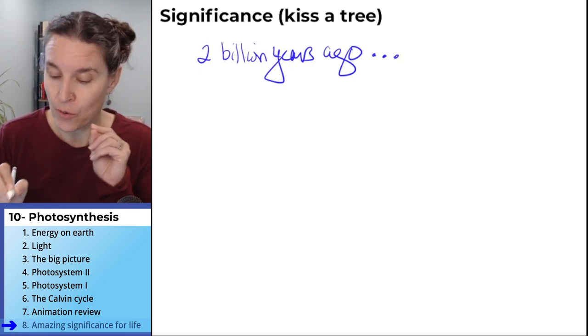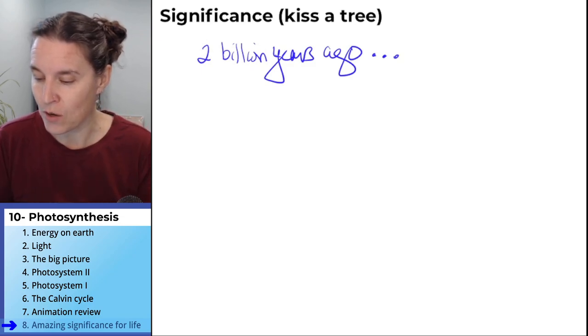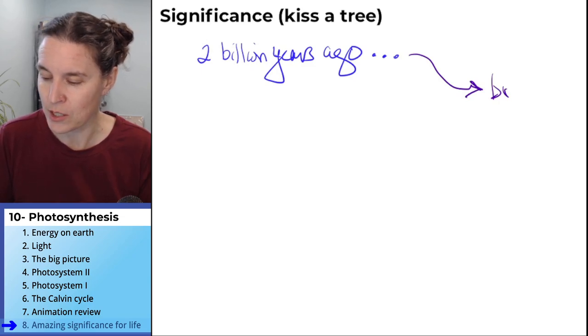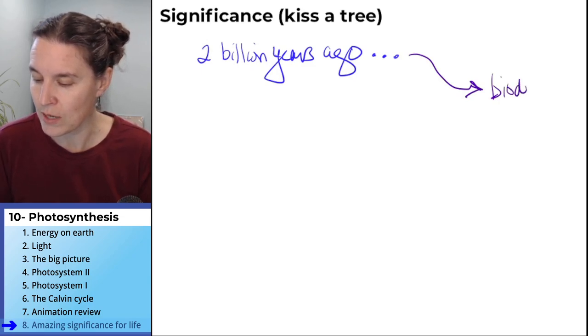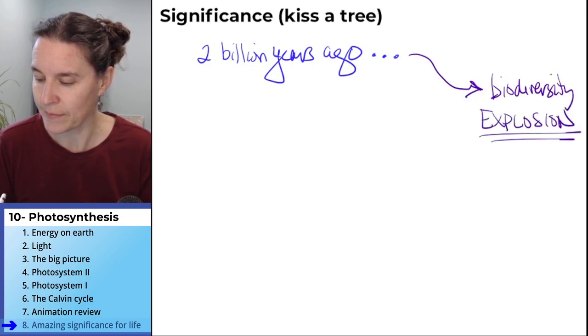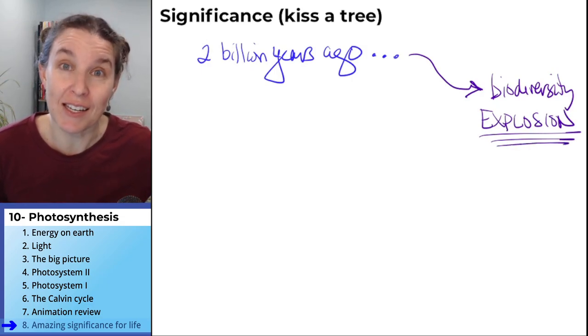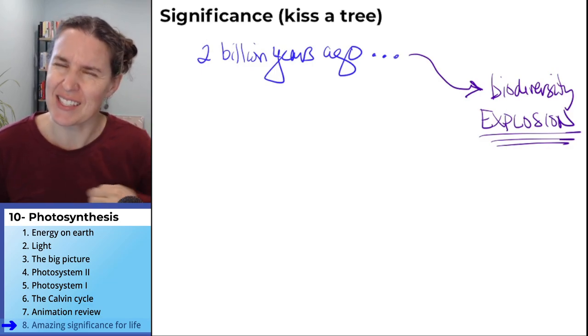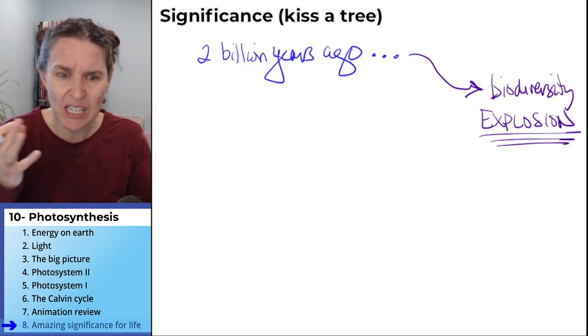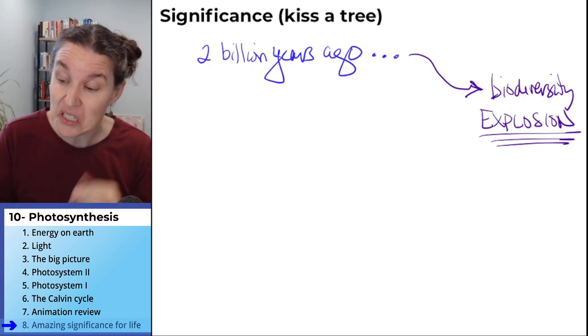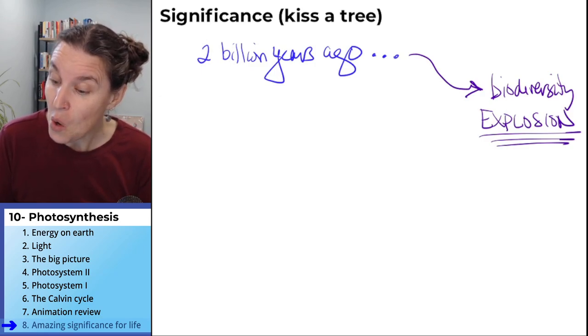2 billion years ago photosynthesis evolved, and the result was, good graciousness, biodiversity explosion. An explosion of biodiversity when photosynthesis evolved. We started getting all these different cool critters with photosynthesis. Why?